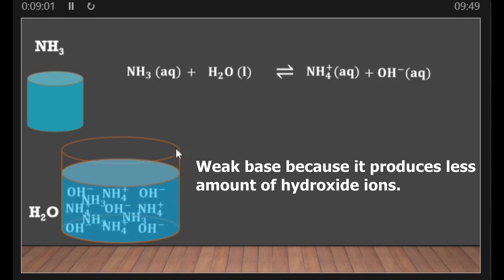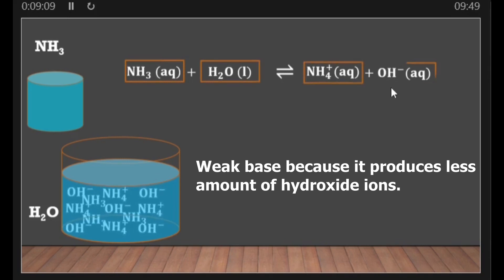What we are saying is that ammonia plus water gives us ammonium ion (NH₄⁺, aqueous) plus hydroxide ion (OH⁻). Alternatively: ammonia plus water gives ammonium hydroxide plus hydroxide ion.